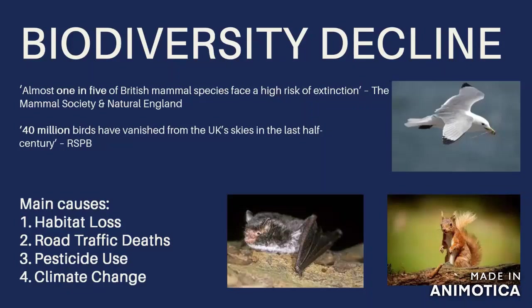Starting with land habitat loss, the main cause is land use change. Previously untouched environments such as woodland, wetlands, or grassland are being changed into farmland or for urbanisation — the spreading out of cities and towns to create residential areas, ripping up that habitat and creating areas where these species cannot survive, with no food sources and no places for them to live.